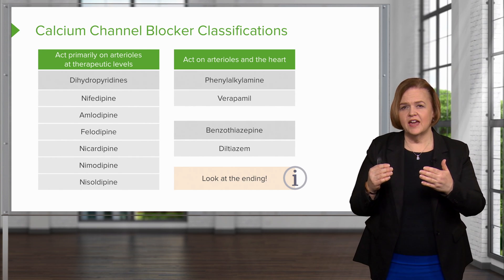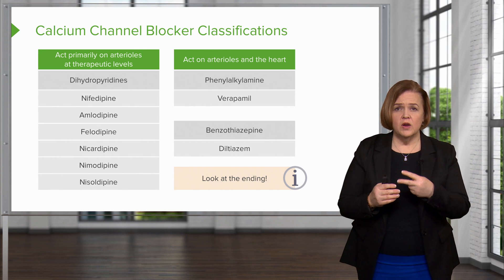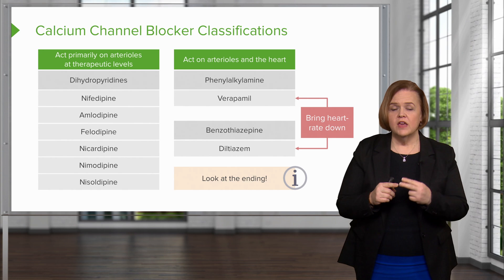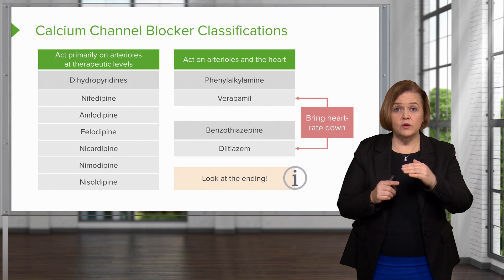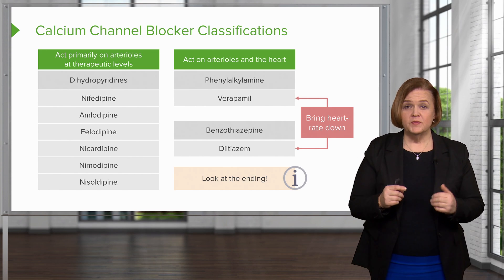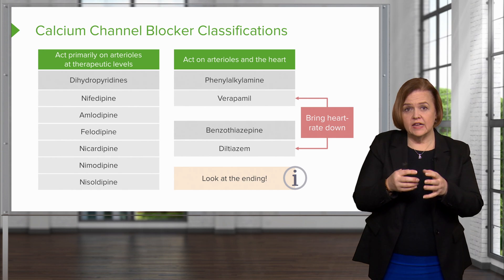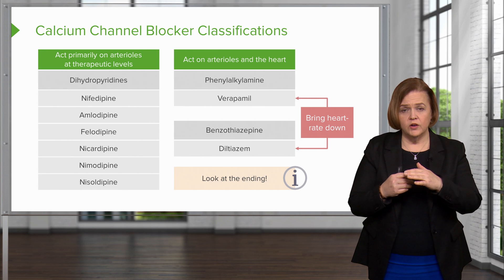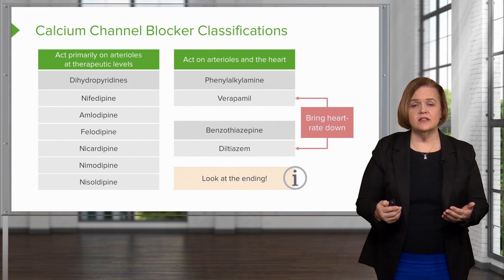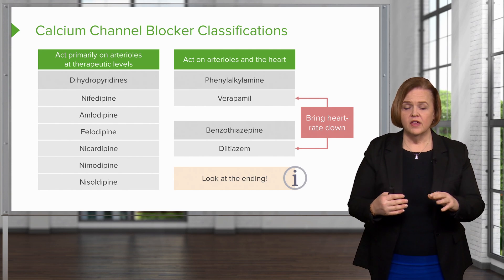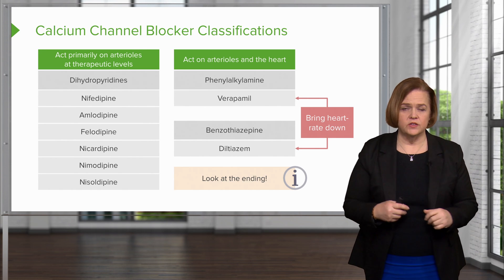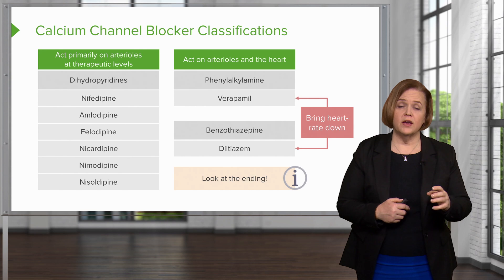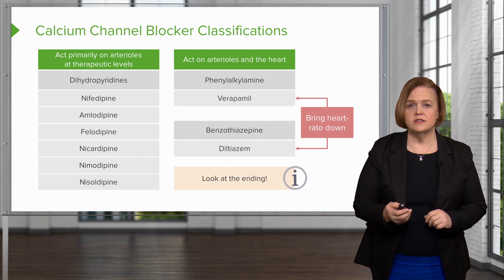Look at verapamil and diltiazem — they're way different. They're representative of those two other families but they act on the arteries and the heart, meaning they will directly decrease your heart rate. So verapamil and diltiazem will bring your heart rate down — that's important to remember. I'm going to get arterioles dilating with all three families, but only verapamil and diltiazem will also directly bring the heart rate down. Look for ways to chunk information together. You can't memorize every drug name, but you can remember: the -pine drugs act primarily on arteries, and verapamil and diltiazem go after both.